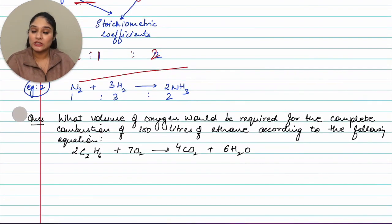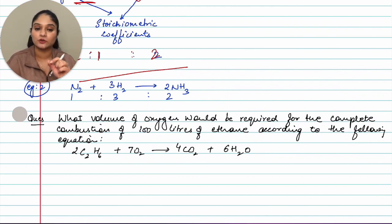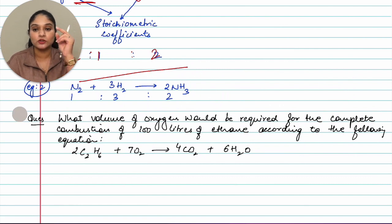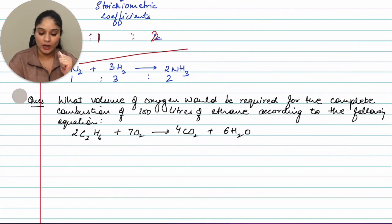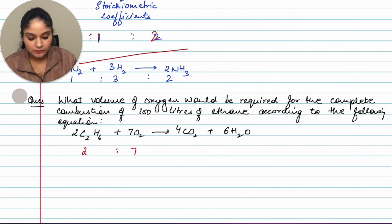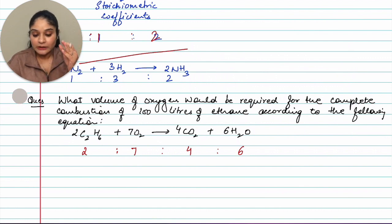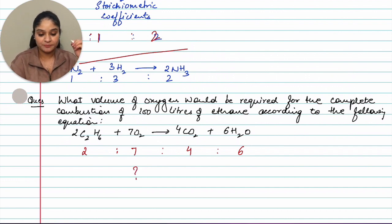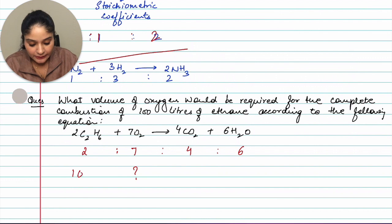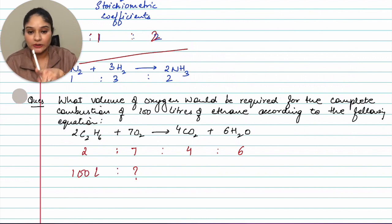Now let's look at a question: what volume of oxygen would be required for the complete combustion of 100 liters of ethane, according to the given equation? I always suggest starting with the equation. Write the equation, then write the ratios — you have 2:7:4:6 as your ratio. We need to find the volume of oxygen, so write a question mark below oxygen, and 100 liters is given below ethane.